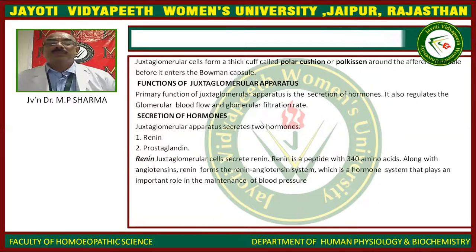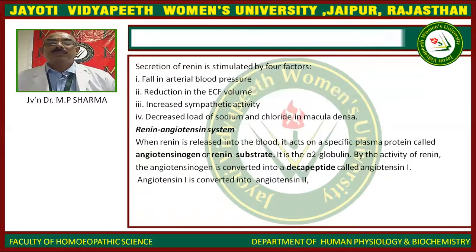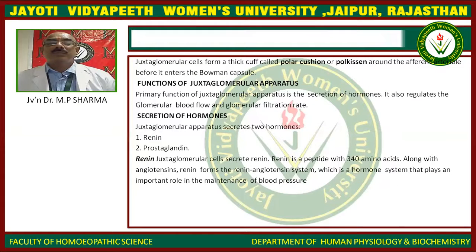The primary function of the juxtaglomerular apparatus is the secretion of hormones, and it also regulates glomerular blood flow and glomerular filtration rate. It secretes the hormones renin and prostaglandins. Renin is a peptide with 340 amino acids and, along with angiotensin, forms the renin-angiotensin system, which plays an important role in the maintenance of blood pressure.